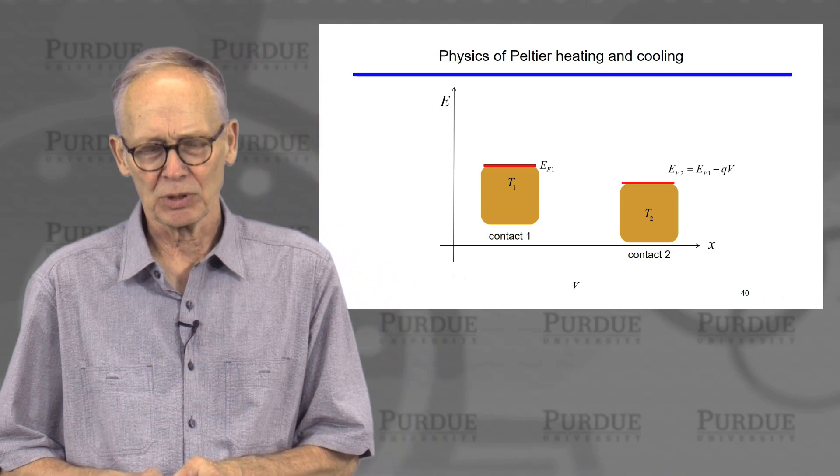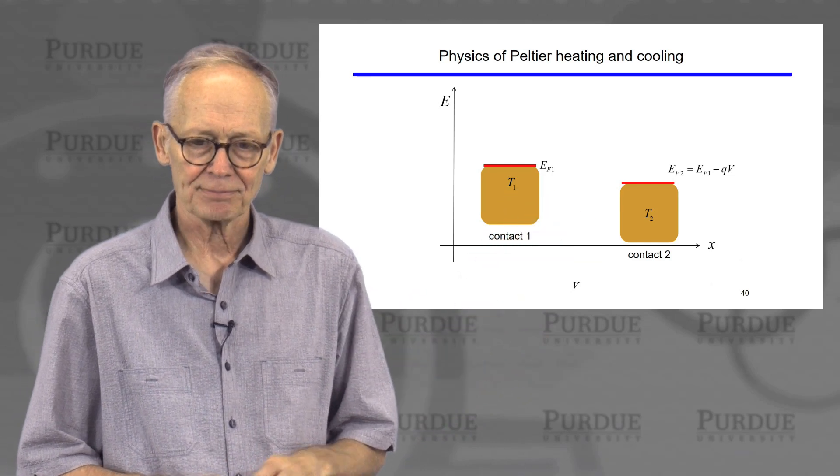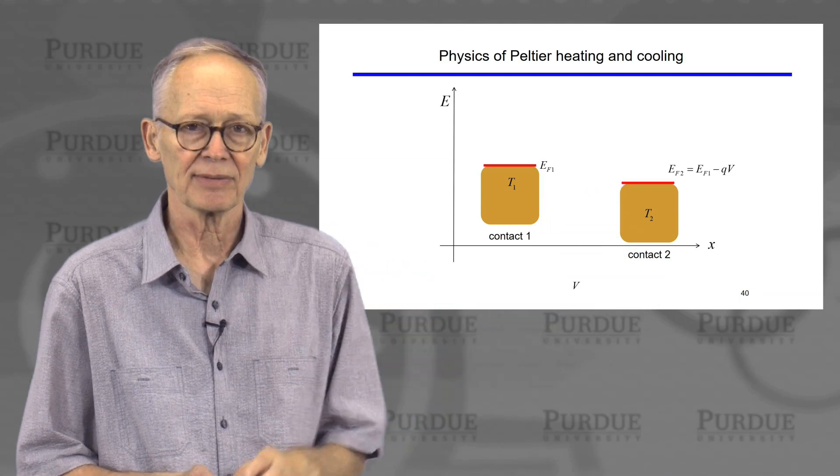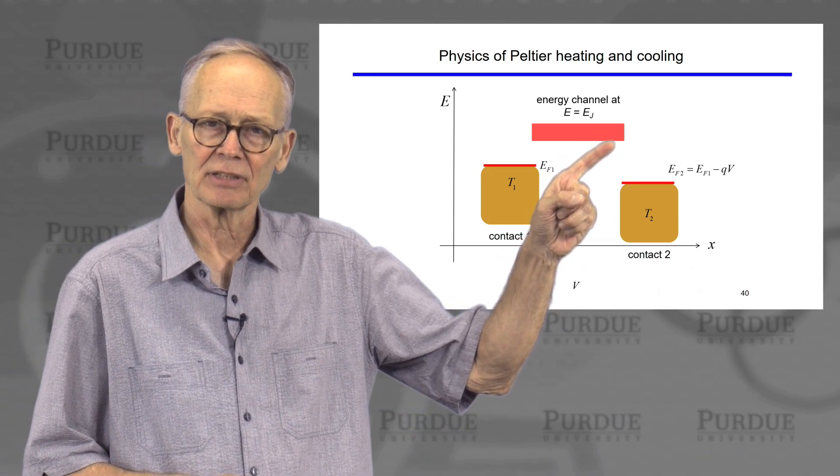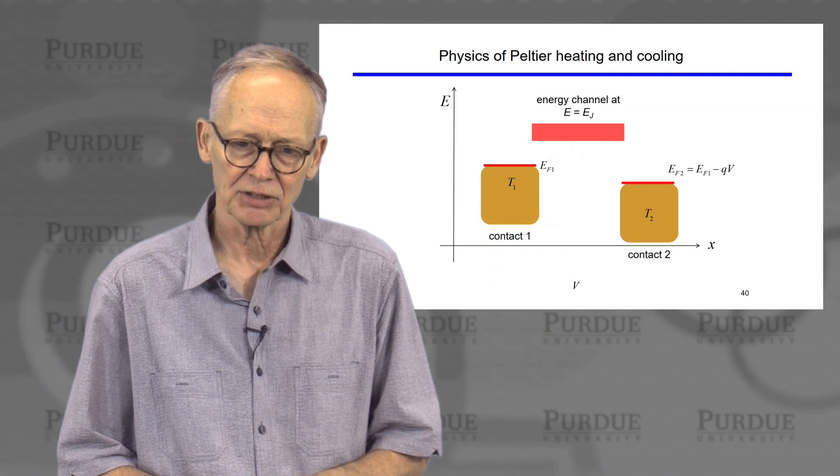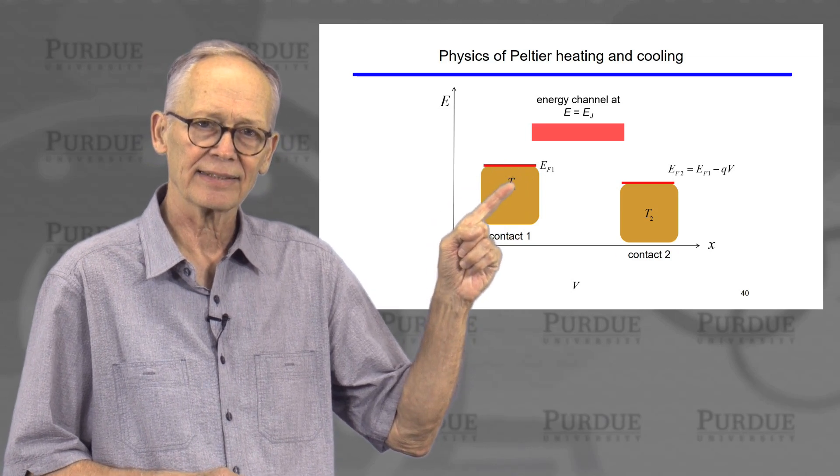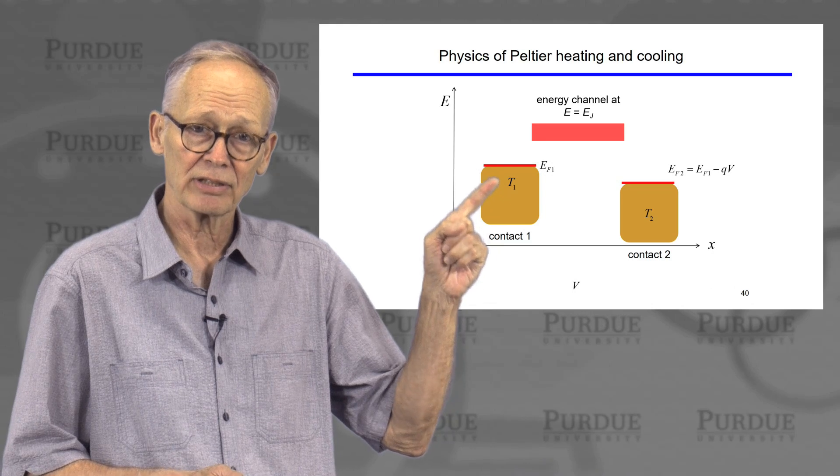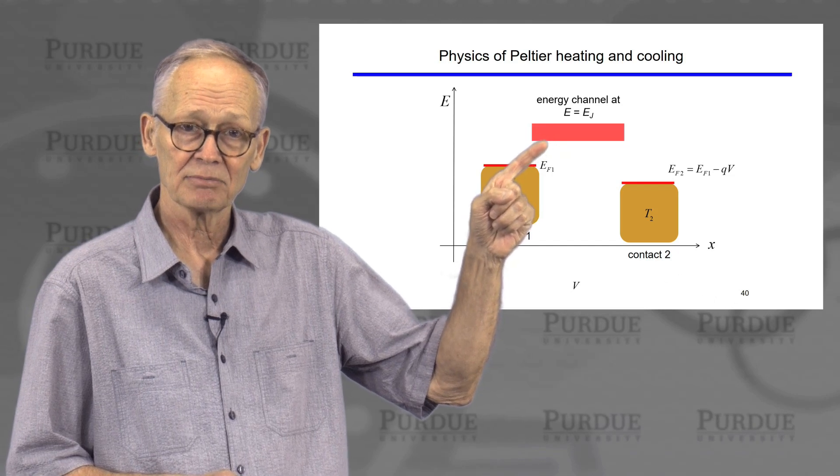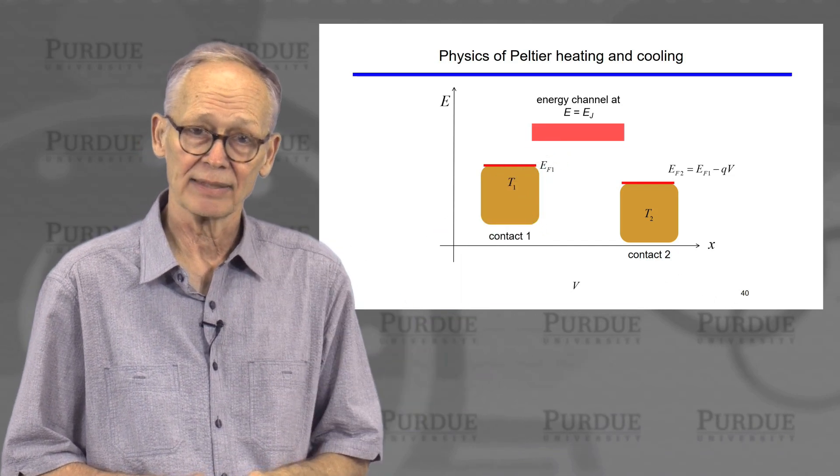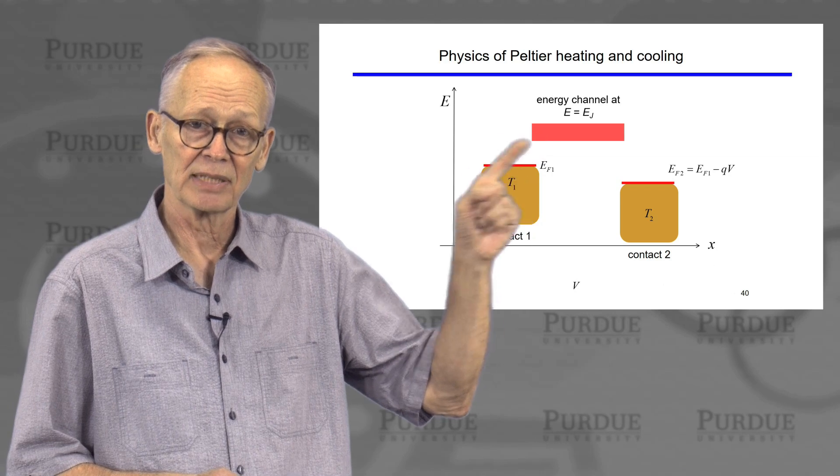So let's look physically at what the Peltier effect is all about. So here I have two contacts. I've applied a voltage difference, so I've lowered the Fermi level in the second contact. I've got an average energy at which current flows here. Let's say an n-type semiconductor just above the bottom of the conduction band. And now the question is, what happens here? I know that the current in the contacts, this is a degenerate material, the current flows near the Fermi level. I know that the current in the semiconductor flows a little bit above the bottom of the conduction band. How do electrons get from the Fermi level in the metal to the bottom of the conduction band in the semiconductor?